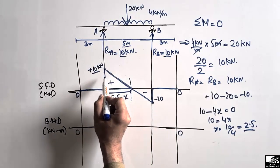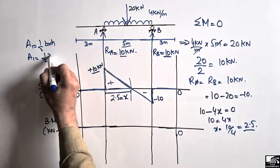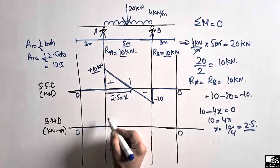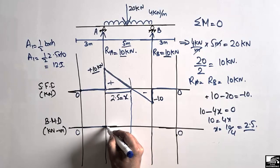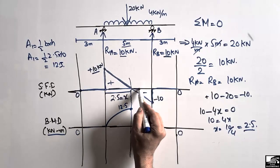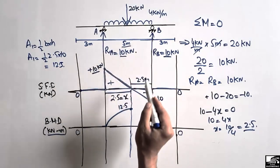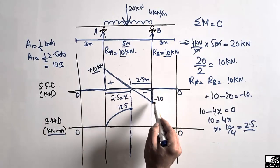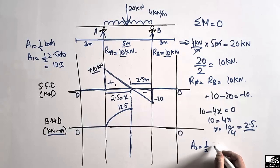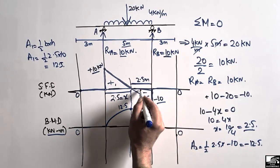Area A1 = half × base × height = 0.5 × 2.5 × 10 = 12.5 kN·m. The bending moment rises to 12.5 kN·m at the midpoint of the loaded zone, where shear force is zero. For the second triangle (negative shear box): the base is also 2.5 m and height is 10 kN, so A2 = 0.5 × 2.5 × (−10) = −12.5 kN·m.